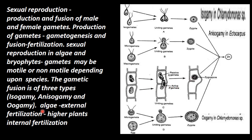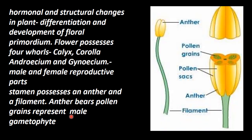In algae, external fertilization happens mainly. But in higher plants, fertilization is internal — that means it happens within the flower structure.